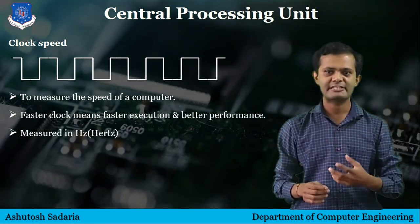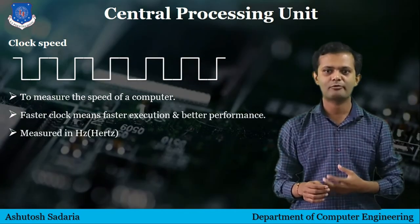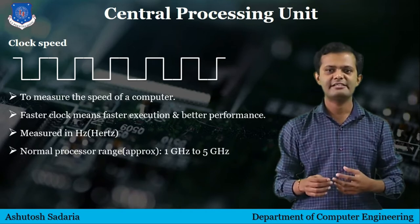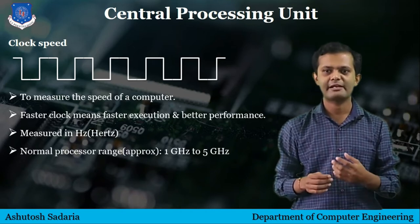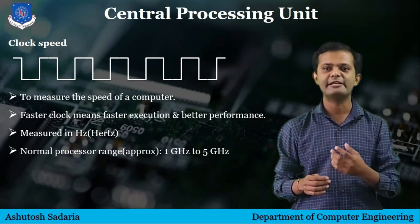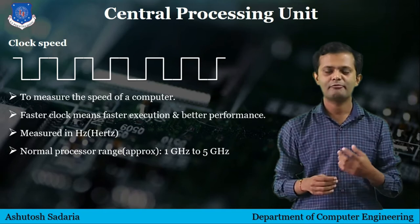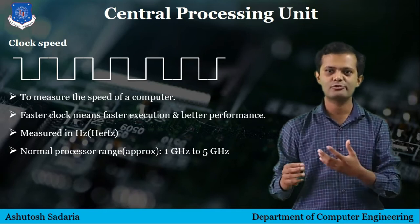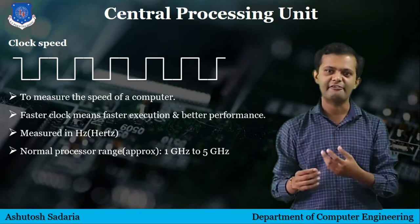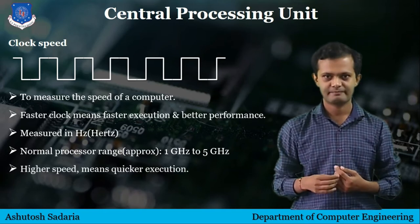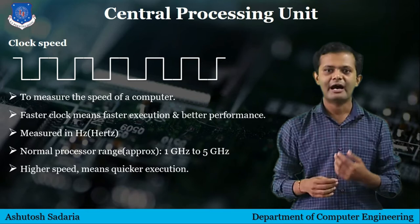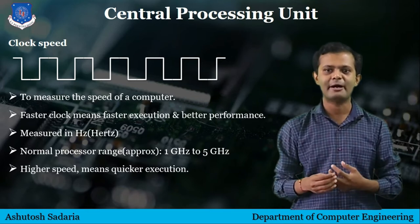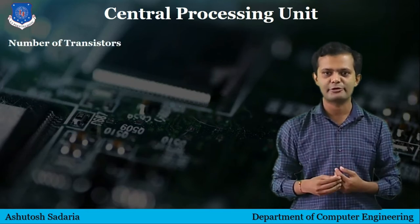The maximum number of clock cycles are measured in hertz. Nowadays processors are in the range of gigahertz, from around 1 gigahertz to around 5 gigahertz. The higher the speed, the quicker the command will be executed.